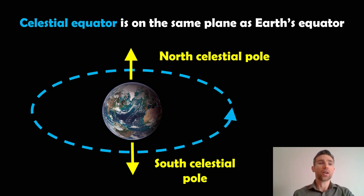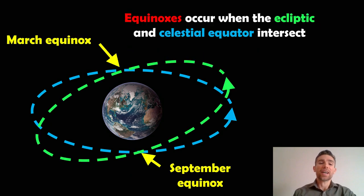Now we need to define the celestial equator. This is on the same plane as Earth's equator, so this is actually relative to the Earth's rotation. If you were to use Earth's equator and go out, that would be the celestial equator on the celestial sphere. We've got the celestial equator, we've got the ecliptic, and it's the two locations where those two intersect where we get the equinox.